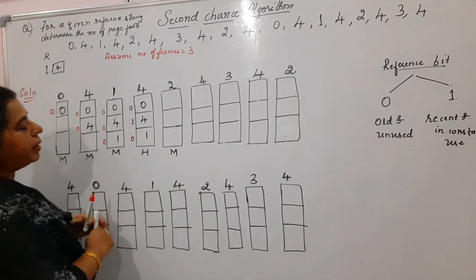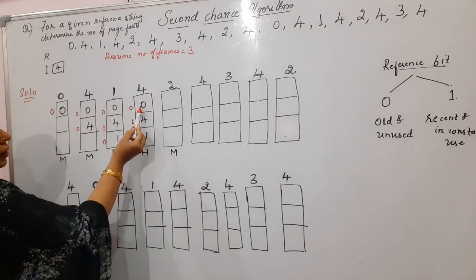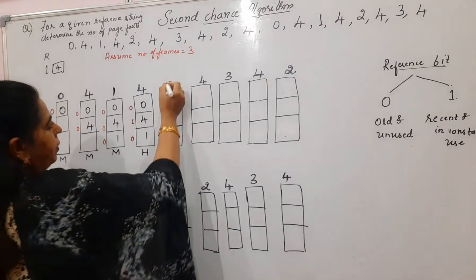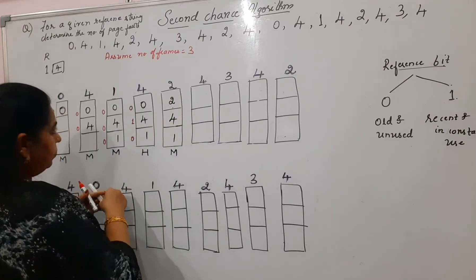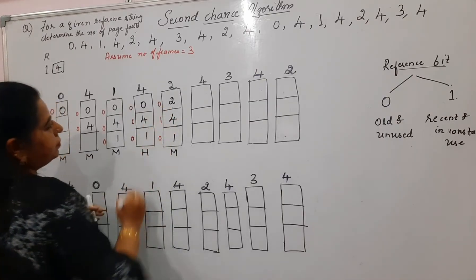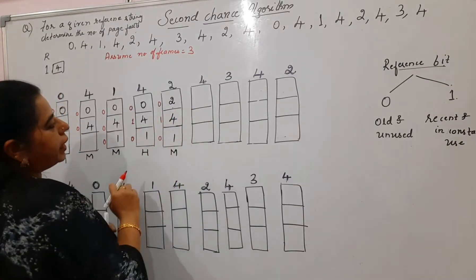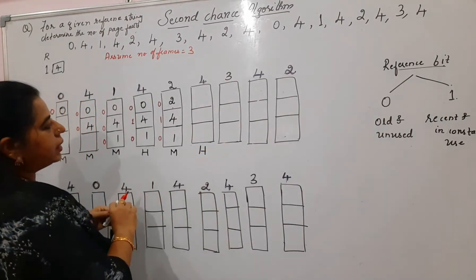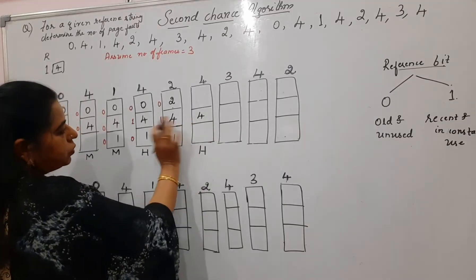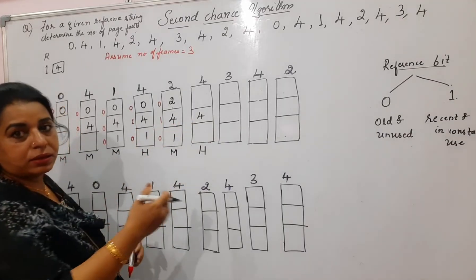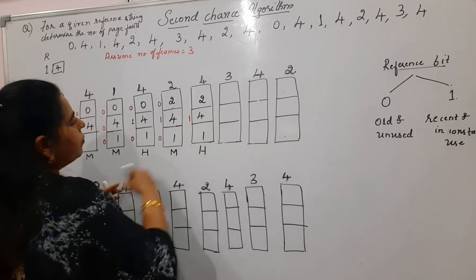Next is page 2. Page 2 is not in memory — miss. Which page to replace? The oldest page in FIFO order is page 0, then page 4, then page 1. Page 0 is replaced by page 2 with reference bit zero. Next is page 4 again — hit. Page 4 already carries reference bit one, so it stays as one. The other pages retain their reference bits.